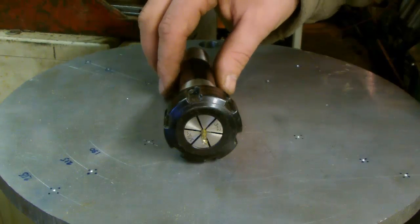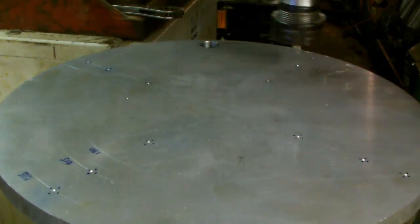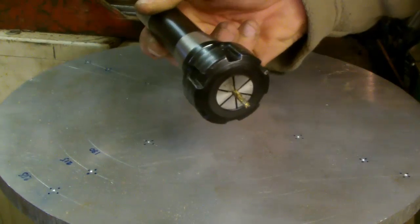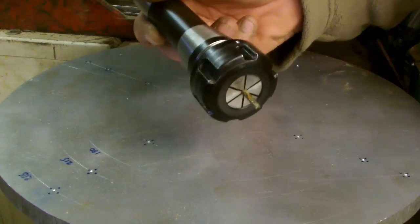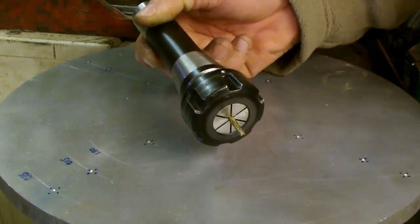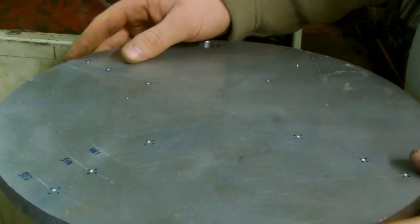Now all we have to do then is mill a little channel out in there, but of course this doesn't move. This is going to be inside the milling head, and what actually does rotate is the table with the plate attached to it.